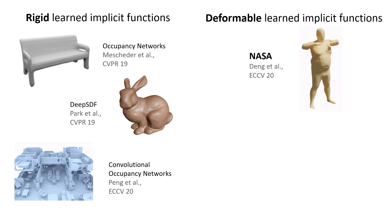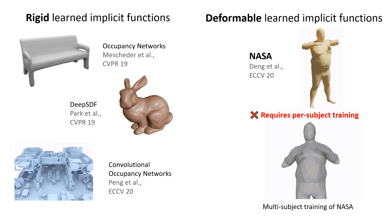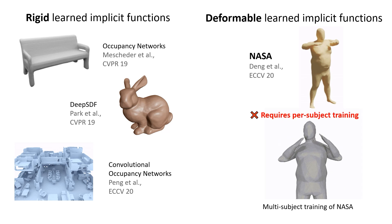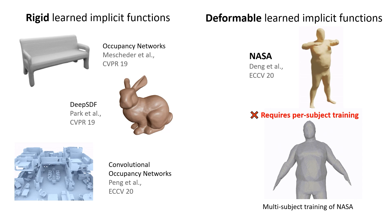One special case is Neural Articulated Shape Approximation, shortened NASA, that takes a set of bone transformations of a human body and represents the 3D shape of the subject with neural networks. While demonstrating promising results, their occupancy representation only works for a single subject and cannot encode multiple body shapes. Therefore, the widespread use of their approach is limited due to expensive per-subject training.